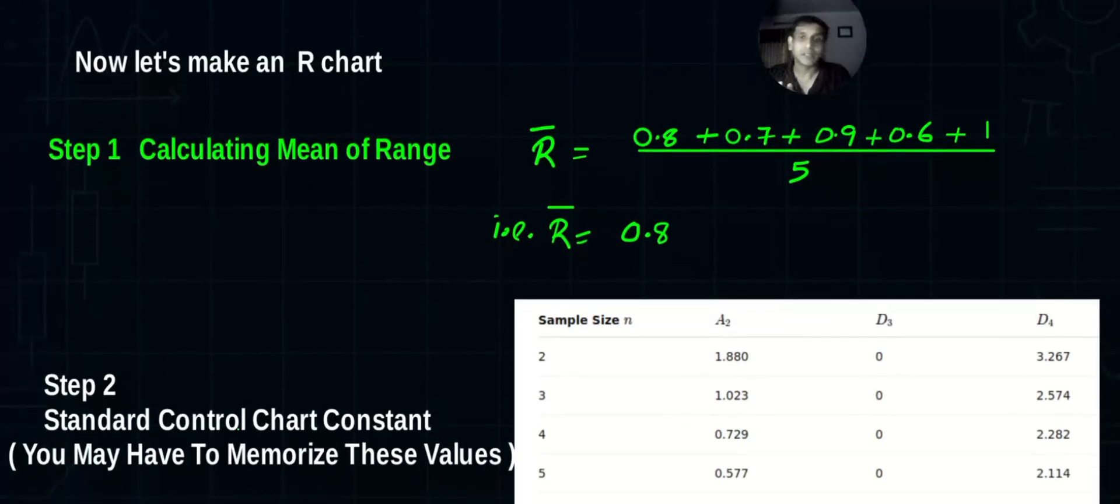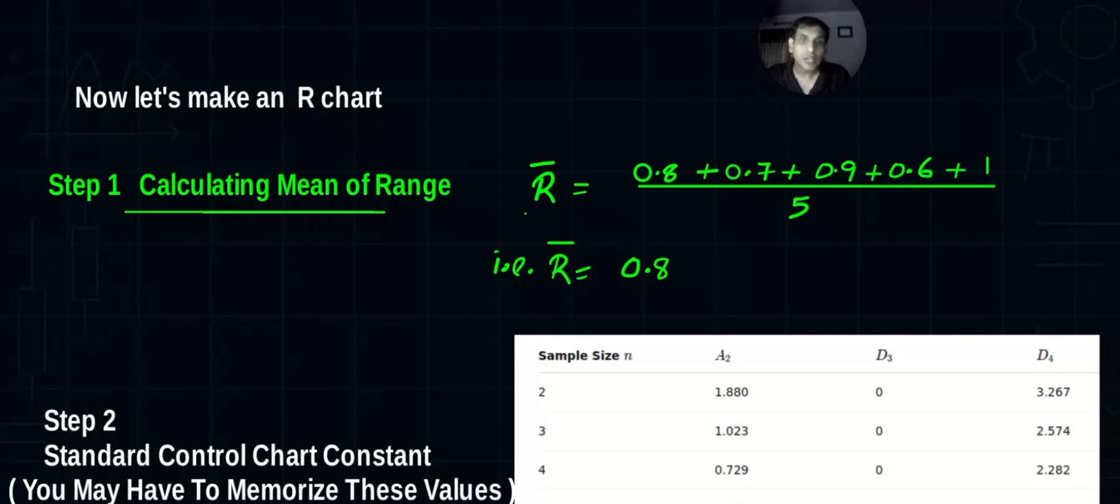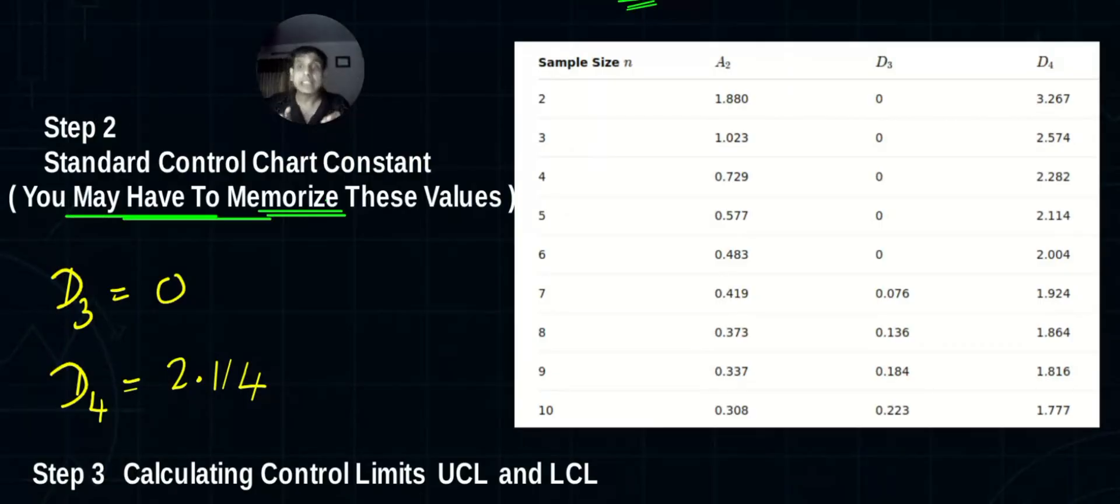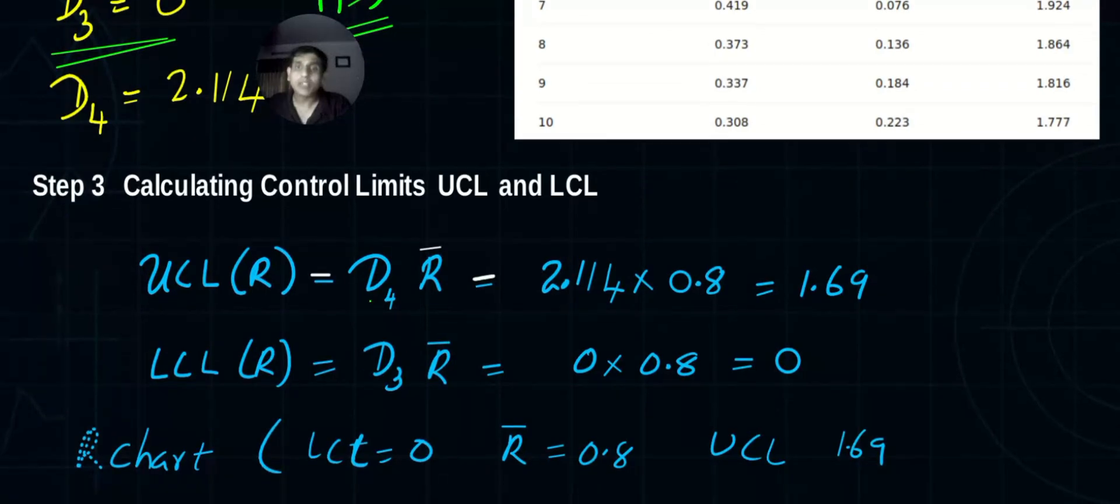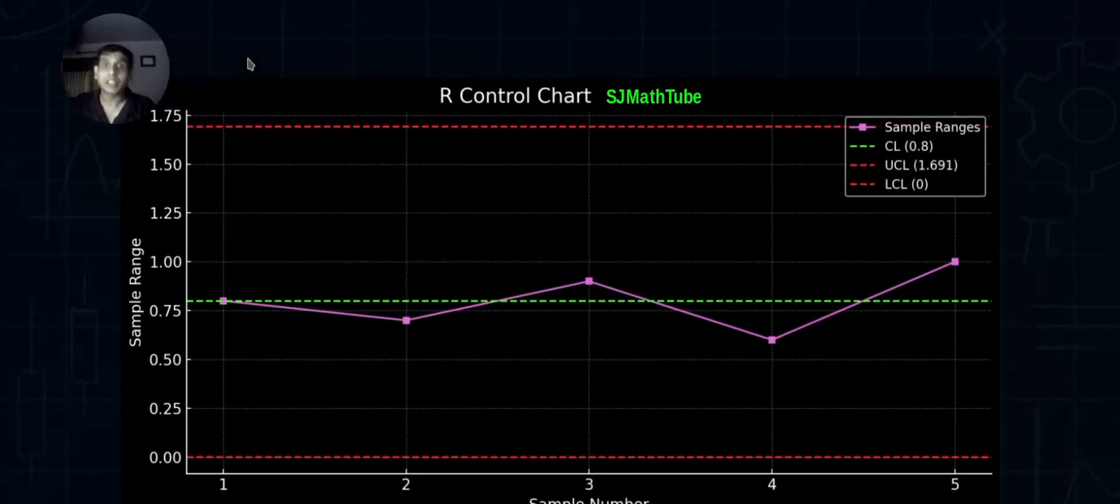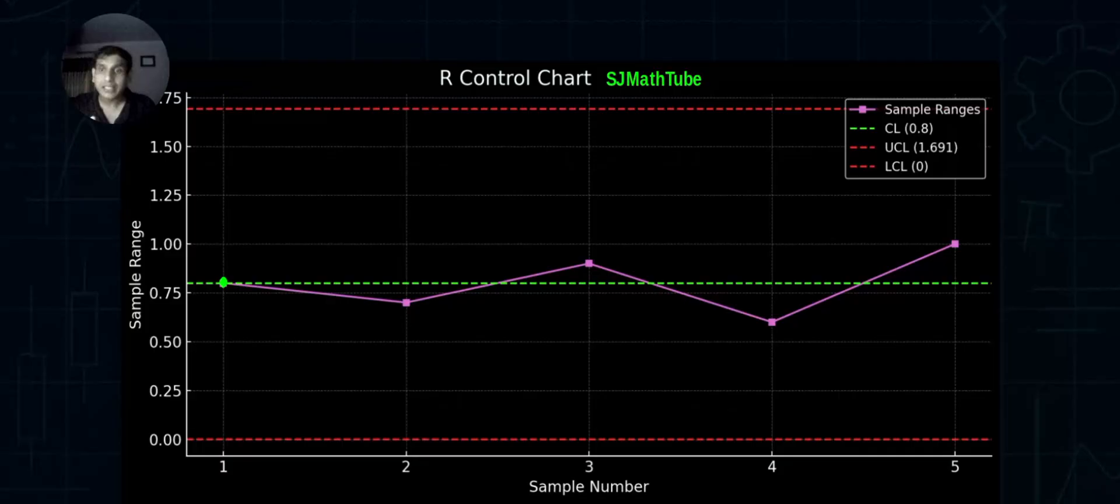Now time to learn the R chart. R chart is also super easy. Step number one: calculate R-bar. We already calculated it. Step number two: for the R chart, you need D3 and D4 industry values. D3 is zero because I'm selecting five, n equals 5. The formula is super simple: the upper limit will be D4 into R-bar, lower limit will be D3 into R-bar. I got the lower limit, upper limit and R-bar value. We have the R chart. By looking at this, these are the R values provided in the question, the central line, the lower value, upper value. Things are in control.